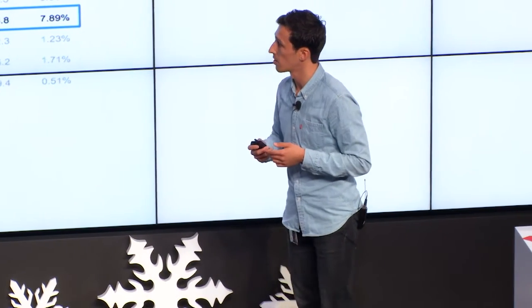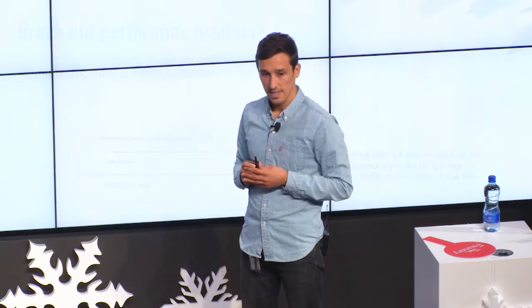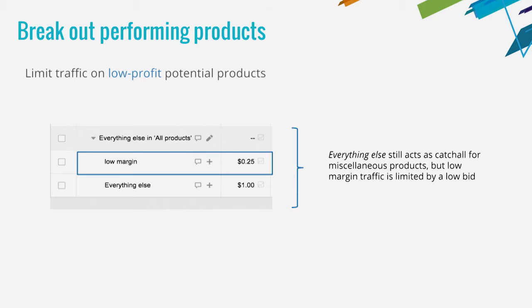Also look at the 'everything else' target — sometimes called the catch-all. What you can do is try to understand what are the low margin products in the catch-all, then go back to your feeds and try to put a custom label with 'low margin', and then subdivide by putting a lower bid on it. That way you make sure you're not spending too much money on those products that are not your top performers.